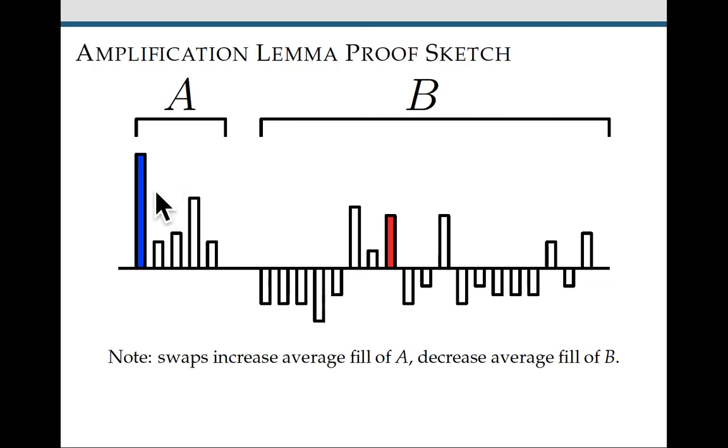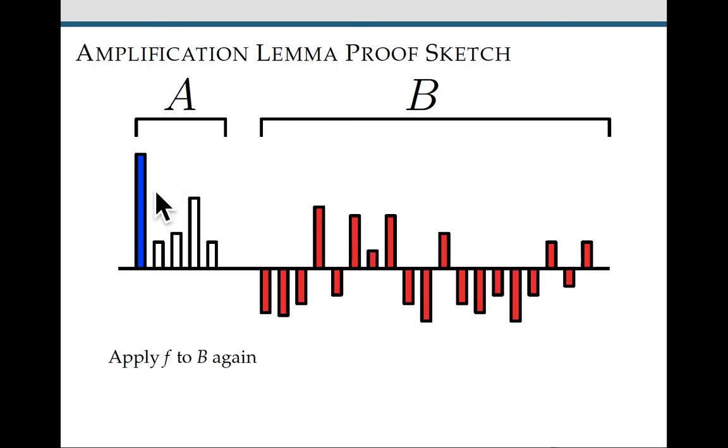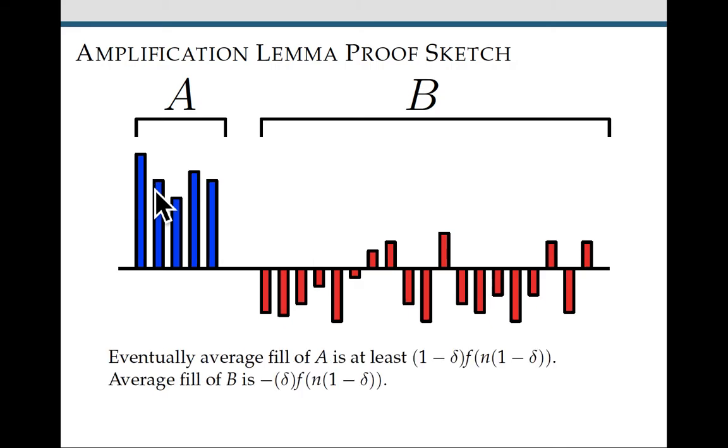And that's going to increase the average fill of a and decrease the average fill of b. And then we can repeat this a lot of times, and eventually, if we do this enough times, we can get 1 minus delta f of n, 1 minus delta as the average fill of a. And the average fill of b is going to have sunk by this corresponding amount to maintain the average fill.